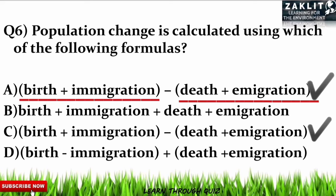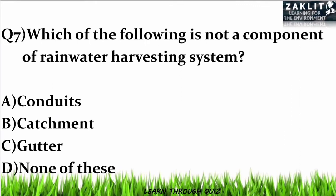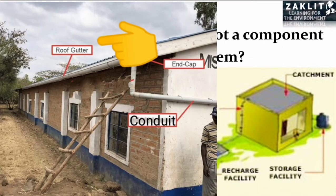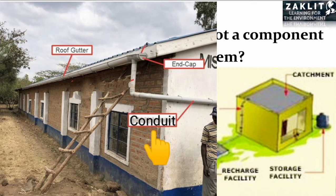The seventh question was related to the rainwater harvesting system. The component which is NOT part of a rainwater harvesting system is option D — none of these — because catchment is the surface that directly receives rainfall; gutters are the channels around the edge of a sloping roof to collect rainwater; and conduits are the pipelines or drainage that carry rainwater from the catchment area to the harvesting system.